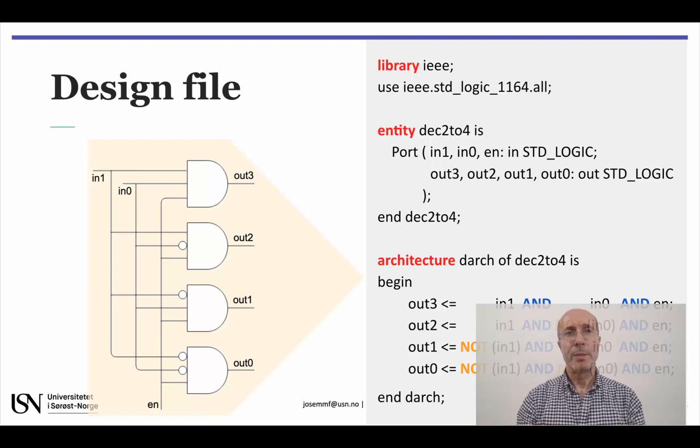This circuit may be represented by the VHDL description file on the right, where you see three sections starting by the keywords Library, Entity, and Architecture. Don't worry if you are not yet familiar with them. Just notice that the Architecture section provides a direct representation of the logic gates and the wiring shown on the left.